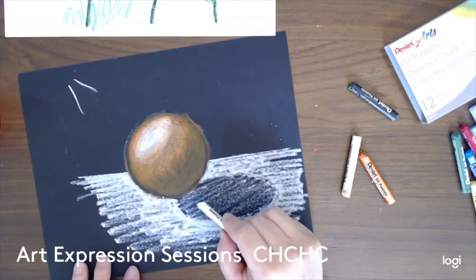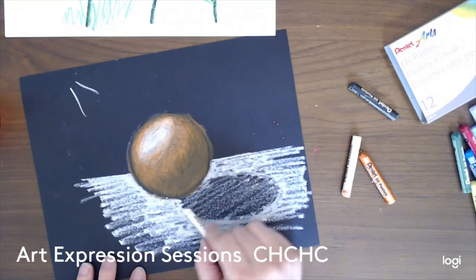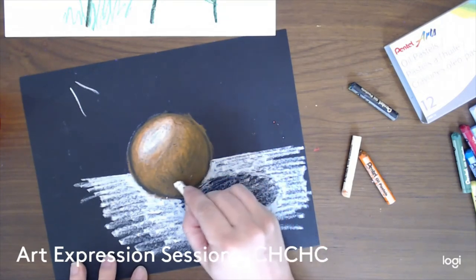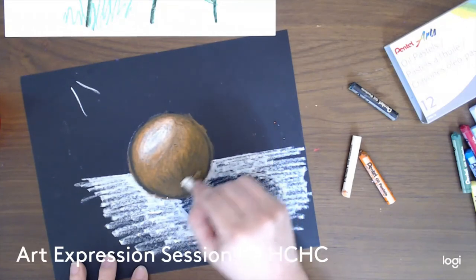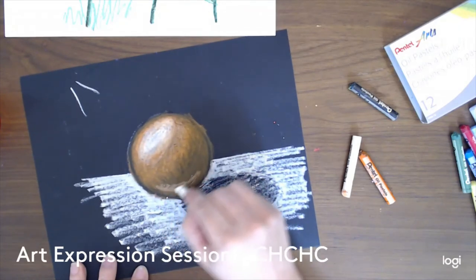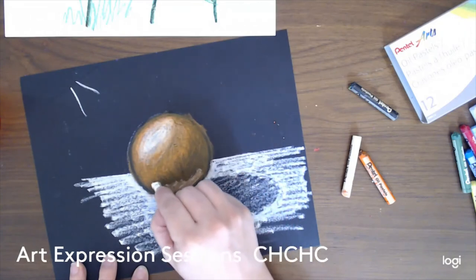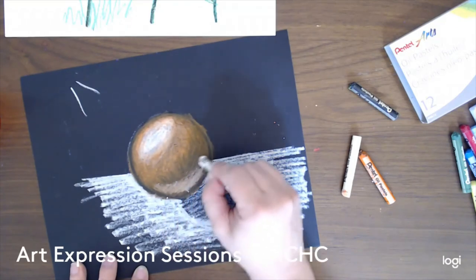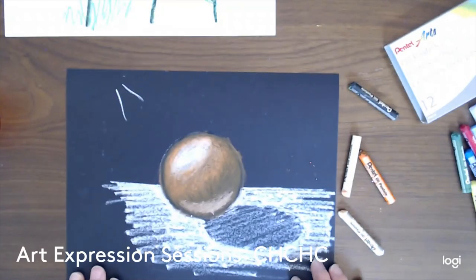Sorry if you couldn't see most of that, but there you go. And then we have a little bit of reflection from the shadow or from the table back onto the ball. So you'll see just a little bit of white being reflected on the underside of this ball. Just like that. And there you go. And now you have a three dimensional ball.